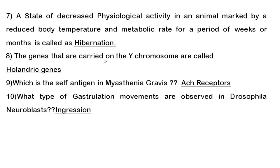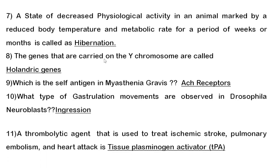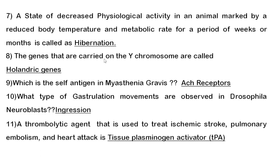Tenth question: the type of gastrulation movement observed in Drosophila neuroblasts is ingression. Ingression is also the gastrulation movement by which the chick mesoderm is formed. The four gastrulation processes are involution, delamination, ingression, and epiboly — each has its own example.